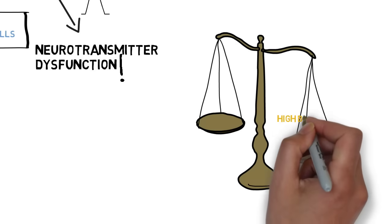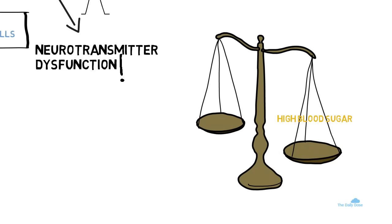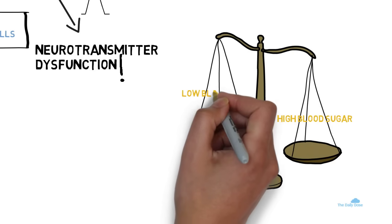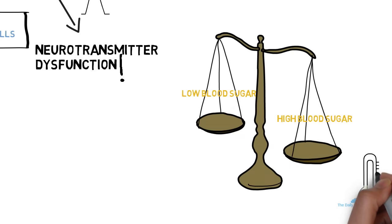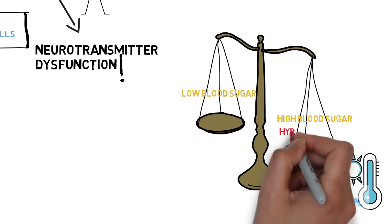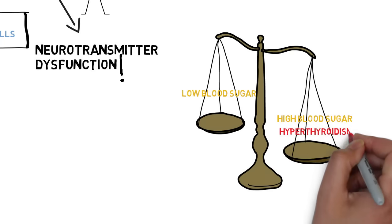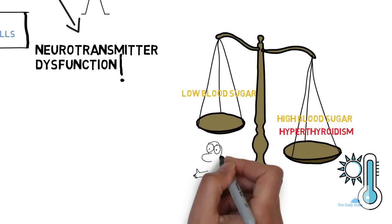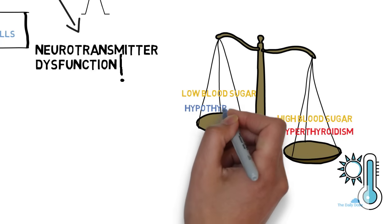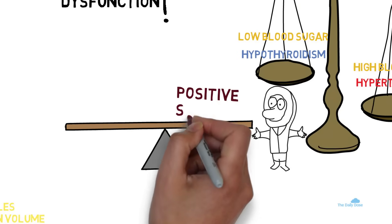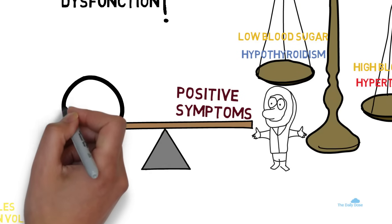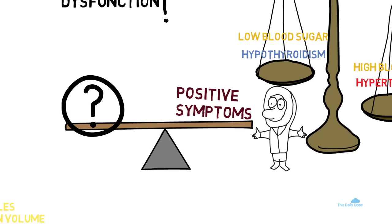For example, too much sugar in the blood causes hyperglycemia, which can lead to diabetes. The opposite condition — too little sugar in the blood — causes hypoglycemia, or low blood sugar. Another example: if your thyroid is overly stimulated, you tend to feel more anxious and hot, a condition called hyperthyroidism. The opposite, when there are low levels of thyroid hormone, you feel cold and down, a condition called hypothyroidism. But what's the opposite of hallucinations or delusions? What's the opposite of positive symptoms in schizophrenia? Positive symptoms seem to have no normal counterpart in the average brain. That is why understanding psychosis is so interesting.